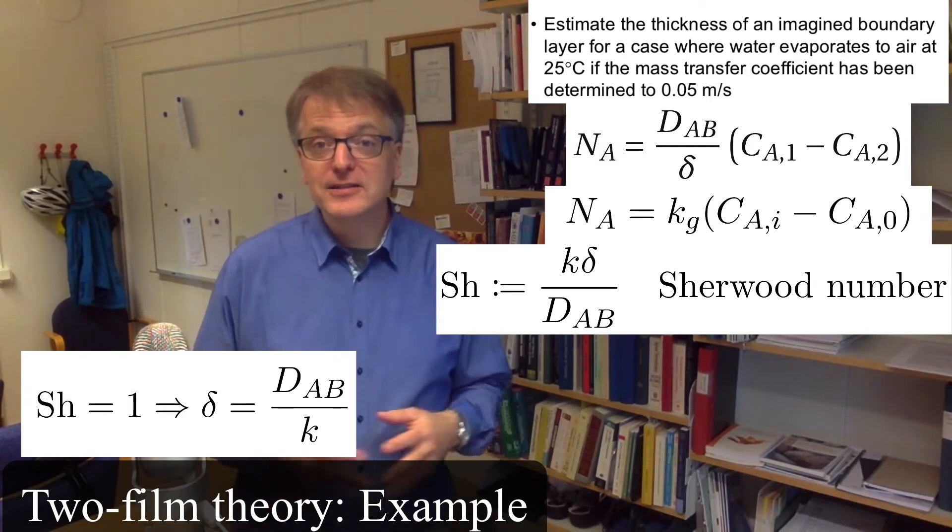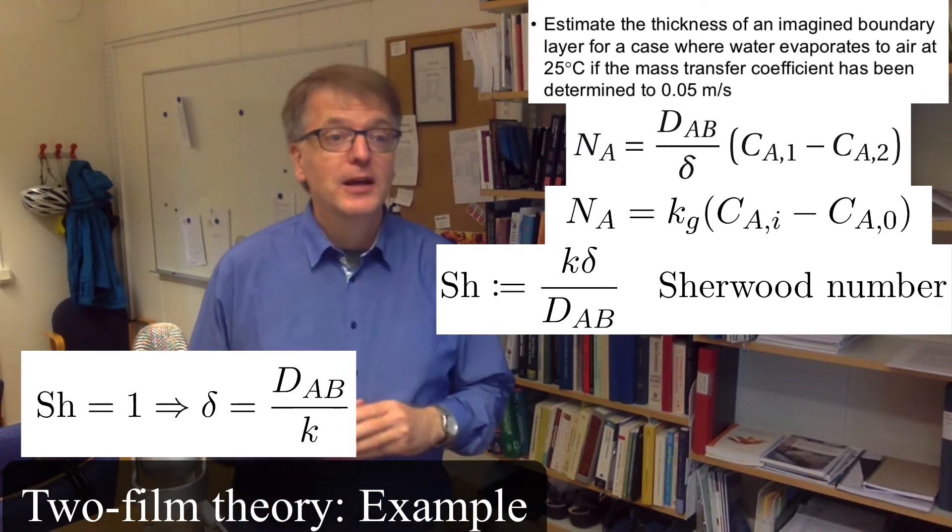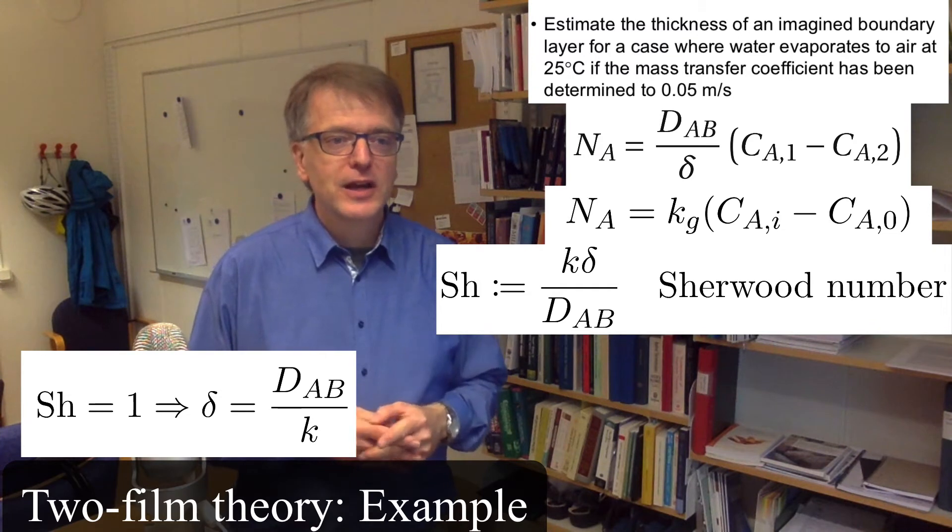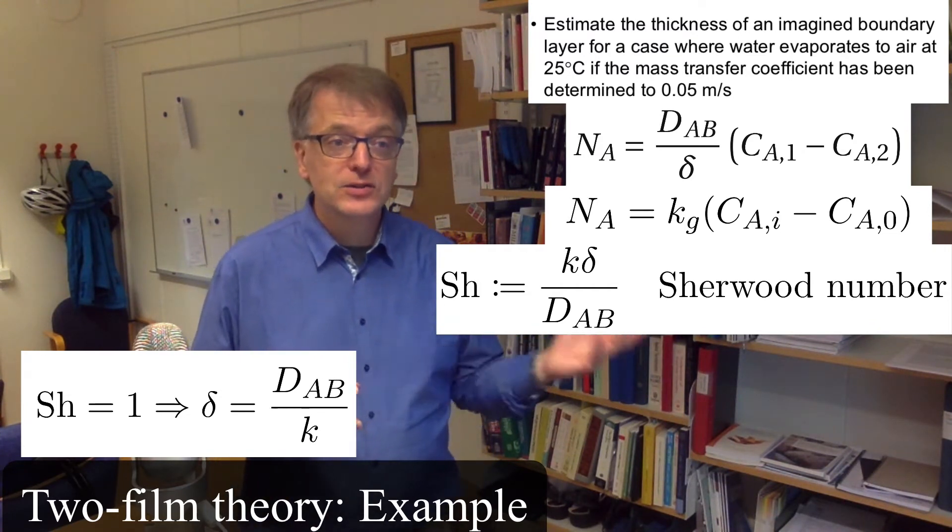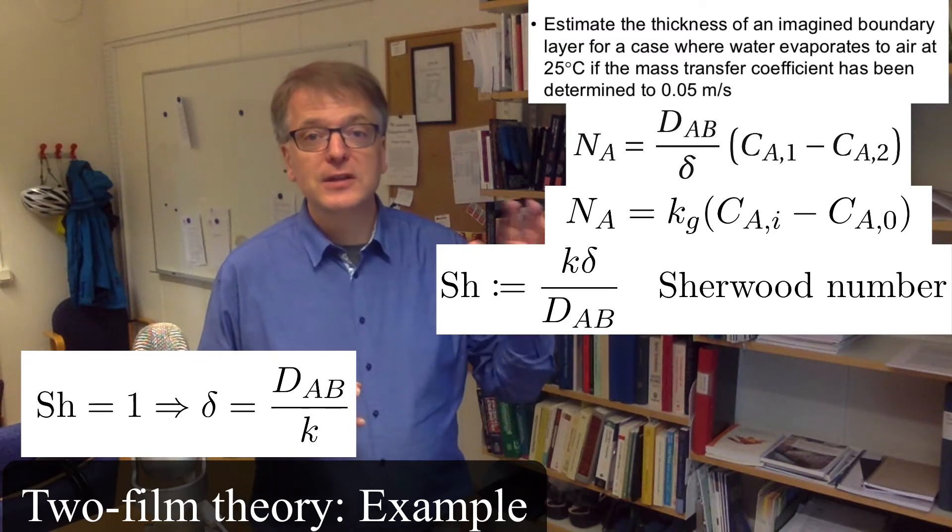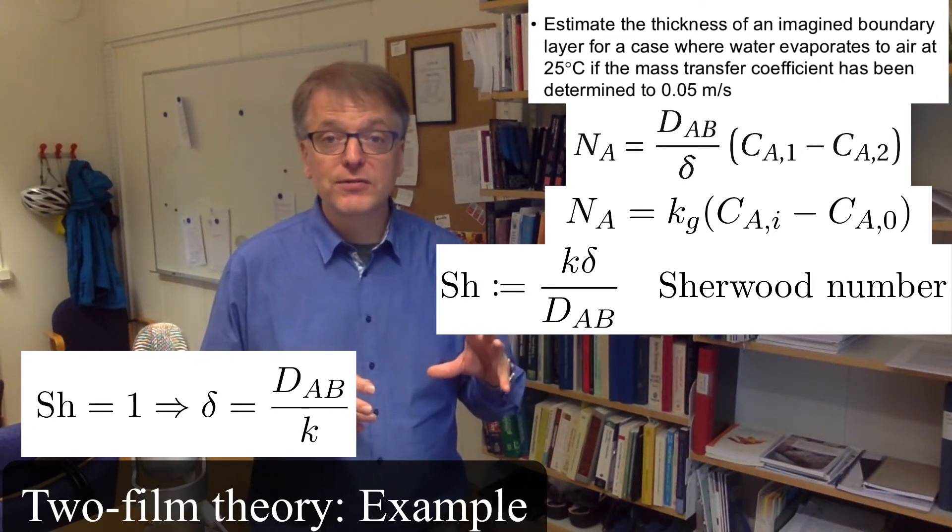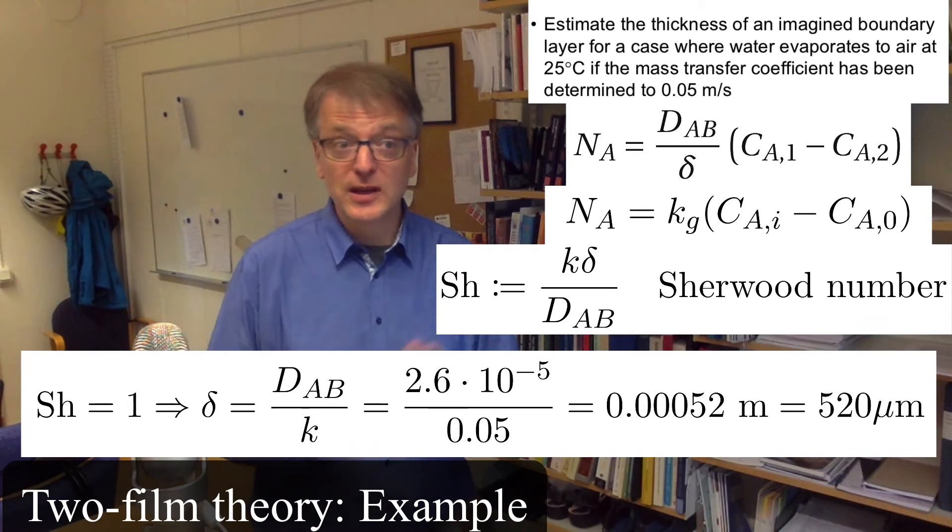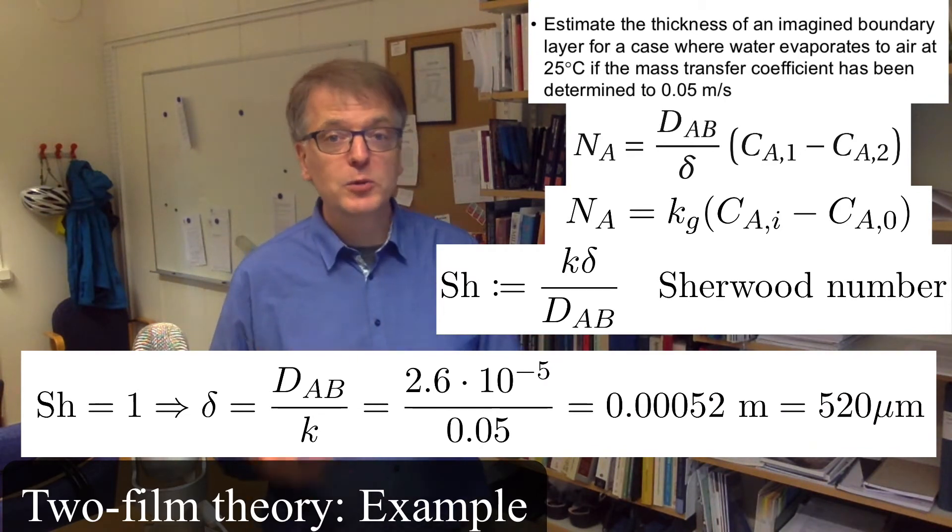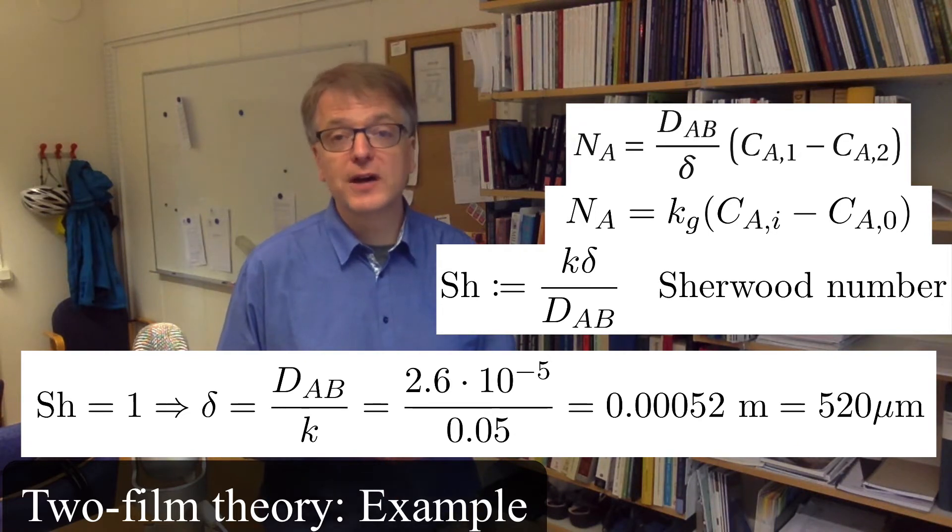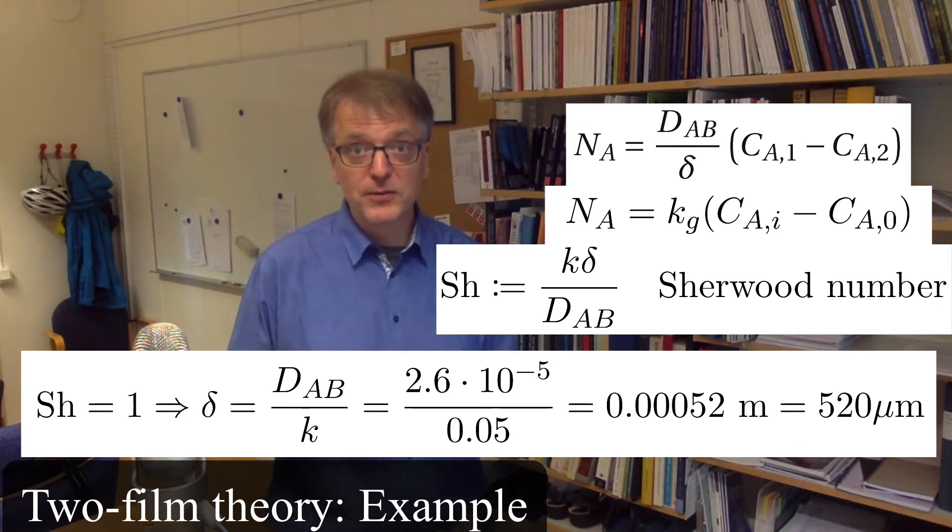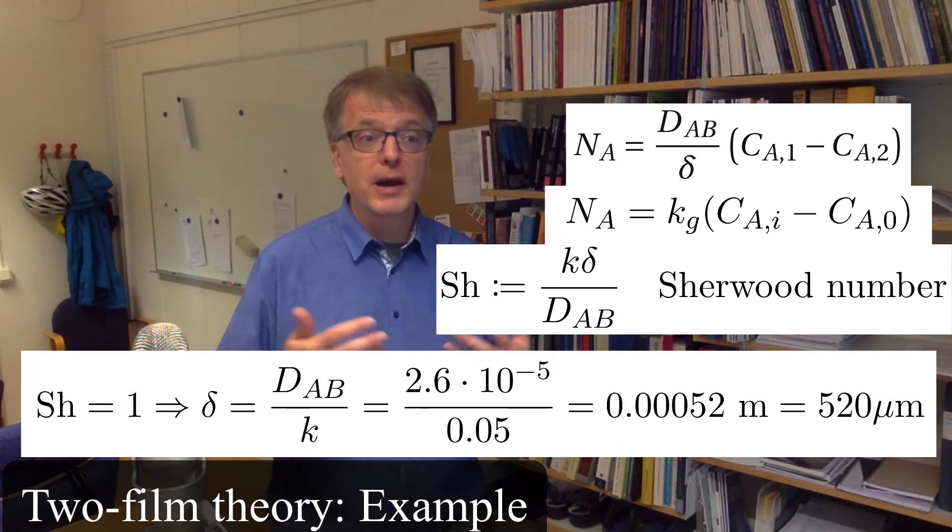If that is a nice assumption, which it might not be, but if it's a nice assumption then we simply can calculate the film thickness as the Sherwood number times the diffusivity divided by the mass transfer coefficient. And we assume that Sherwood equals 1, so we get 1 times 2.6 times 10 to the power minus 5 divided by 0.05 and we get a film thickness of 520 micrometers.